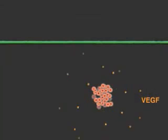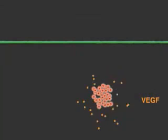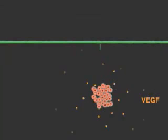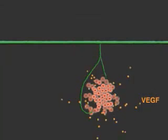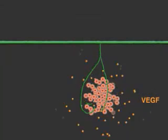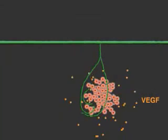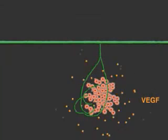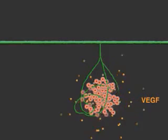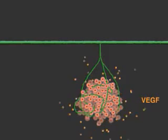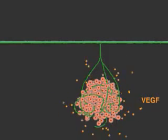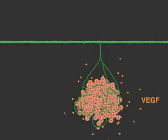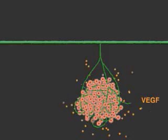VEGF diffuses through the tissues, activating endothelial cells on nearby vessels. This results in capillary sprouting. Some new cancer therapies are targeted to block the action of VEGF with varying clinical results.